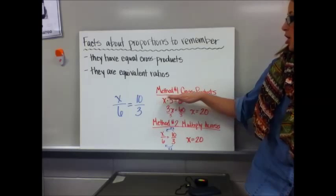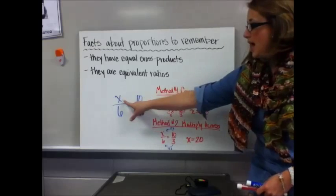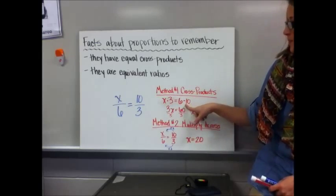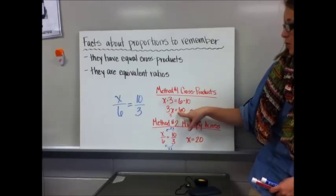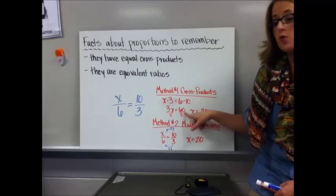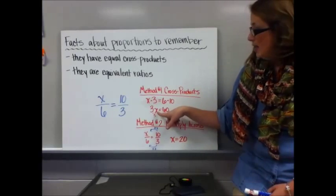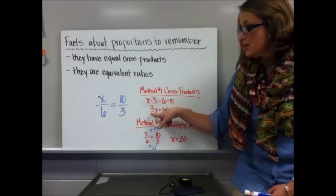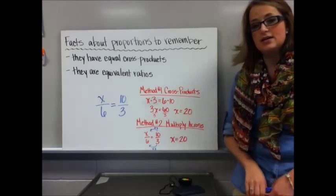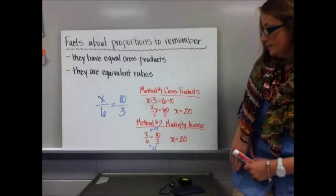First, using cross products: if you multiply diagonally, x times 3 and 6 times 10, you get 3x equals 60. Then from solving equations, we want to isolate the variable — it's being multiplied by 3, so divide by 3 on both sides, and you end up with x equals 20.